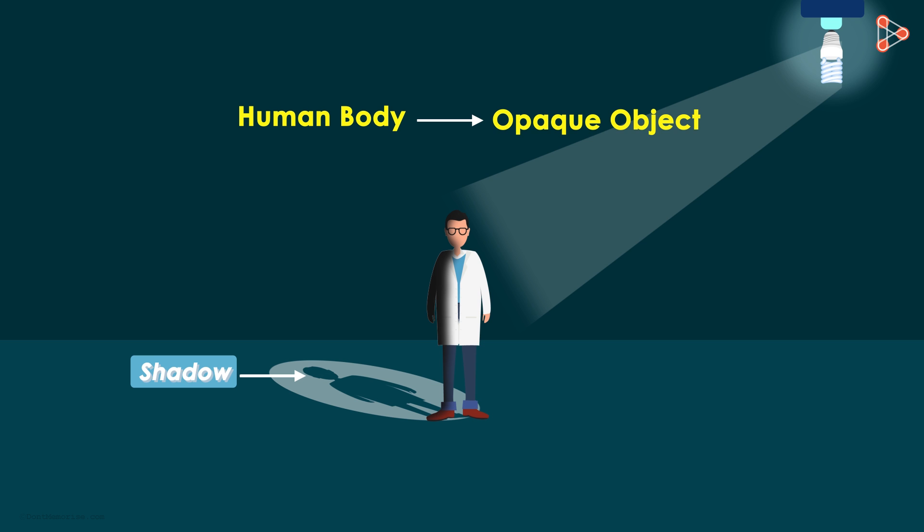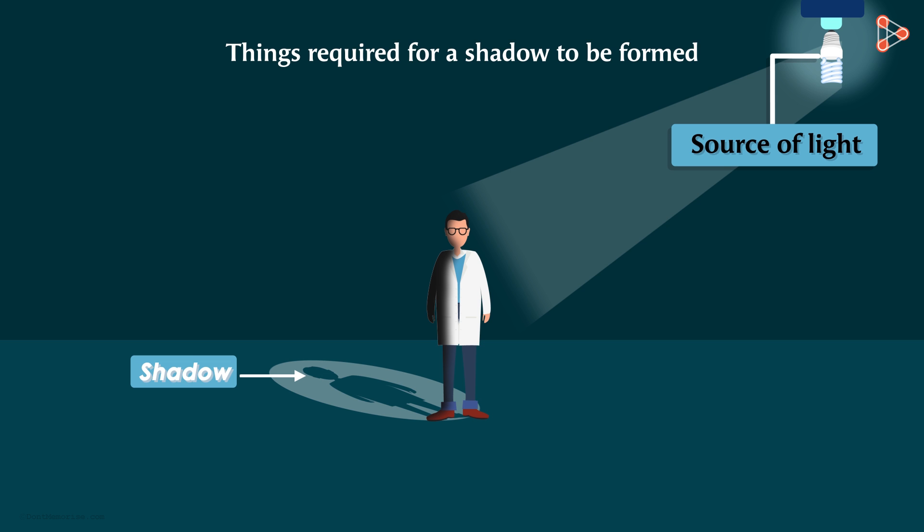Now looking at this, can you tell me the things that are required for a shadow to be formed? Two things are obvious. First, a source of light which is in front of the body. And second, an opaque object. Here, the human body is the opaque object.